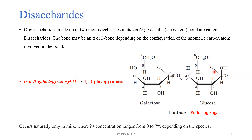Looking at that structure, carbon one is involved in the glycosidic bond and makes a bond with carbon four of glucose. When carbon one — the anomeric carbon — bonds with carbon four, which is not the anomeric carbon, we then write 'D-glucopyranose' to indicate this is D-glucose in a six-membered ring. Both monosaccharides are in the beta configuration, so beta is written only once.